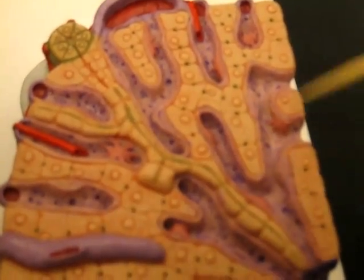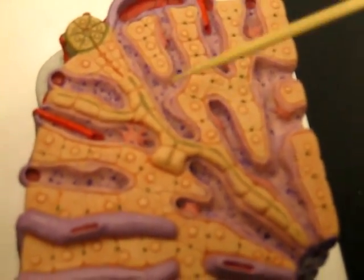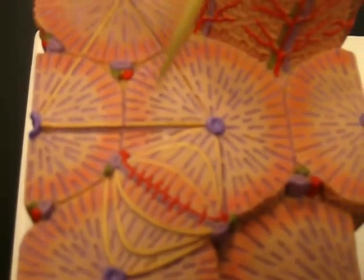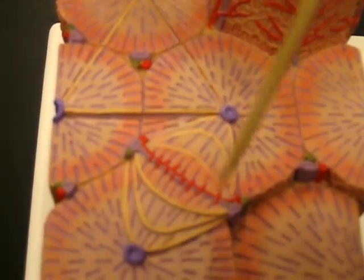This whole thing is the hepatic triad. There's one in each of the six corners of the lobules, so if you go back to the lobules, you can see one in each corner.